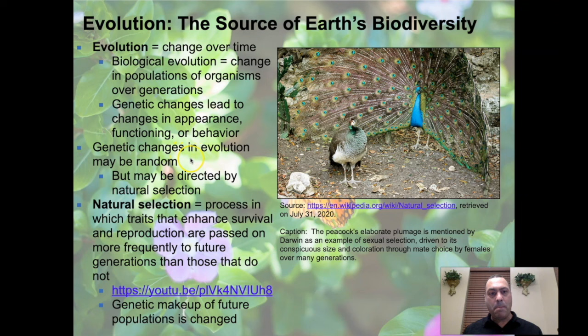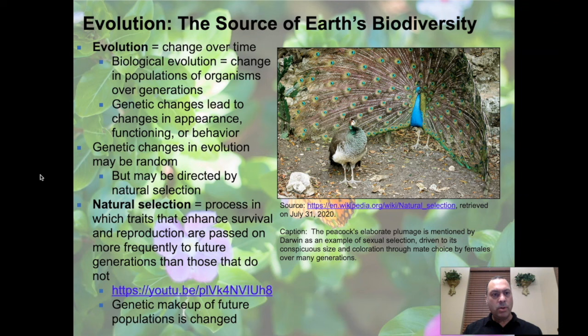Genetic changes in evolution may be random — they could occur due to a mutation. However, some changes are favorable. For instance, x-ray vision might be advantageous if it helps you detect threats and be a great hunter — but it might also take up so much energy that it shortens your lifespan. Life is full of trade-offs.